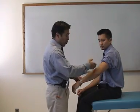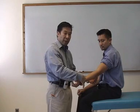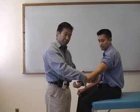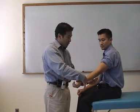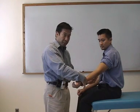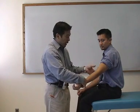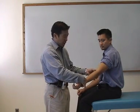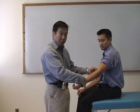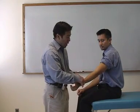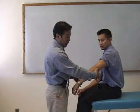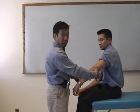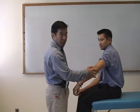Then move on to the medial compartment, palpating the medial epicondyle as well as the MCL. In the anterior compartment, palpate generally over the anterior portion. In the posterior compartment, palpate the triceps insertion as well as the olecranon bursa.